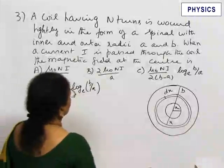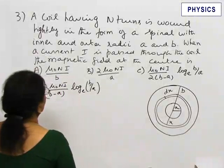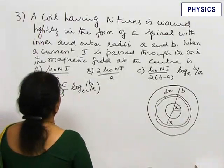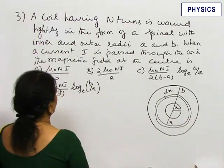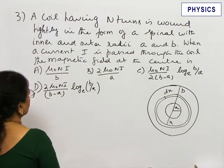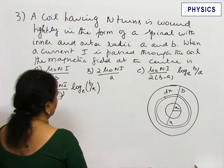Problem 3: A coil having N turns is wound tightly in the form of a spiral with inner and outer radii A and B. When a current I is passed through the coil, the magnetic field at the center.